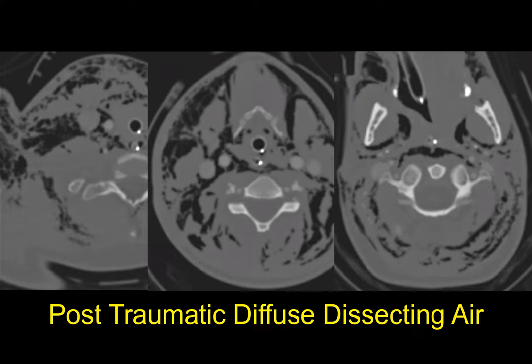We know that there is some variability of these fascia layers — they're not complete all the time, and there are often holes, as we're reminded in cases with diffuse dissecting post-traumatic air. We know that there are connections between these spaces, but they are a relatively good barrier for things like infection and disease. So we can think about the suprahyoid and the infrahyoid neck in terms of these spaces that are defined by those fascial slips.